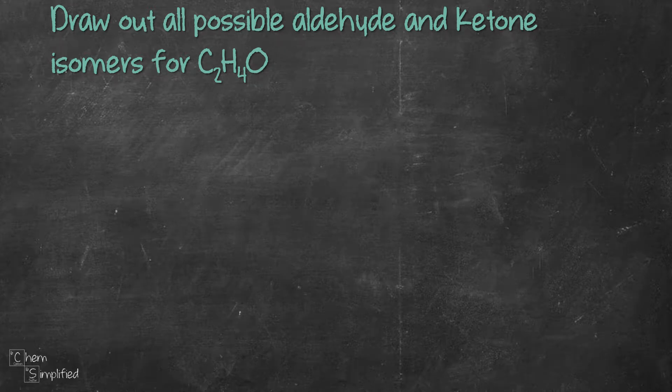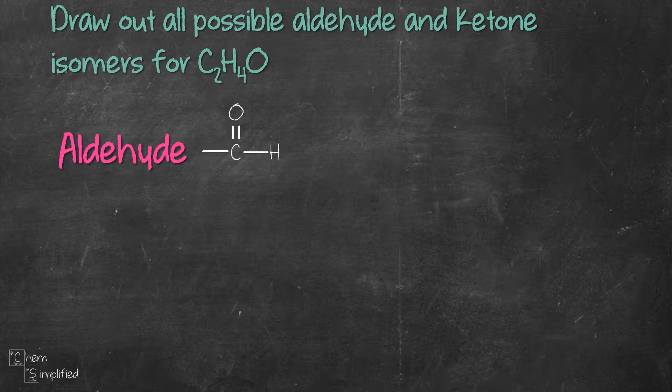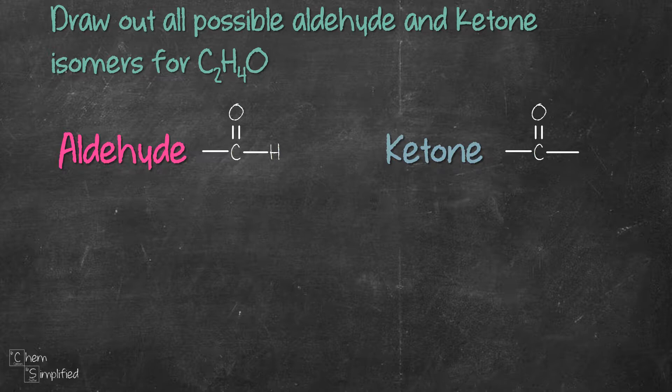The question is asking us to draw out all possible aldehyde and ketone isomers for C₂H₄O. An aldehyde has a carbonyl functional group — C double bond O — connected to a hydrogen, and note that the carbonyl group in an aldehyde is always at the first carbon. For a ketone, it also has a carbonyl group, but it is sandwiched between two carbons.